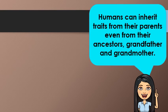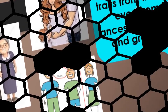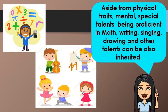How about humans? We can also inherit traits from our parents, even from our ancestors — grandparents, grandfathers, and grandmothers. Look at your parents. What physical features did you inherit from them? Aside from physical traits, mental and special talents — being proficient in math, writing, singing, drawing, and other talents — can also be inherited from our parents or ancestors. What special talents did you inherit from your parents?